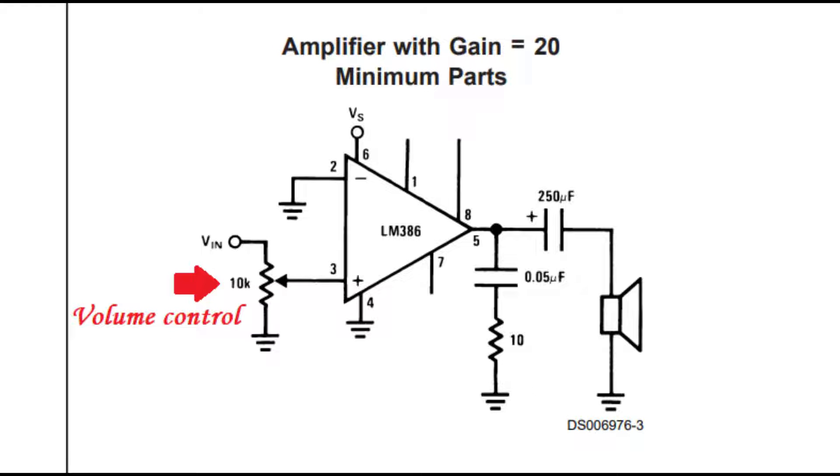If your input signal level is too high, then it can cause distortion or unwanted white noise. So with amplifiers, it is best to control the volume at the input.